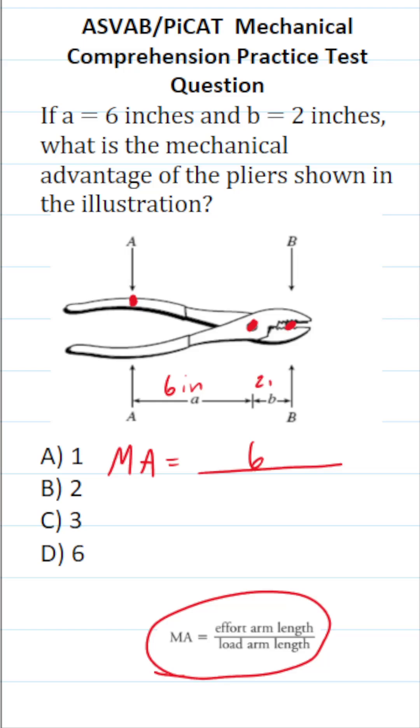And according to the problem, that's 2 inches. So our mechanical advantage is going to be 6 over 2, which is 3. So these pliers have a mechanical advantage of C, 3.